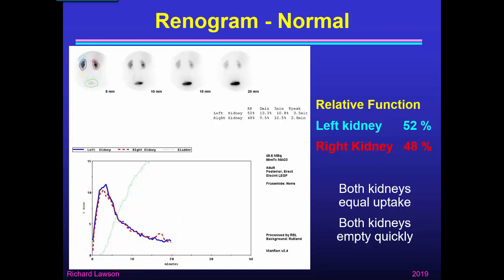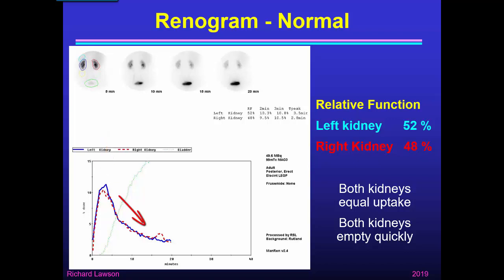We can see that the left and right kidneys rise at the same rate in the first few minutes, showing that uptake and function in both kidneys is about the same. The computer calculates the left kidney function at 52% of the patient's total renal function and the right kidney at 48%. Both kidneys reach a peak at about four minutes and thereafter begin to empty, showing that both kidneys empty normally in this case. This is the sort of result we're aiming to produce by our renogram analysis.